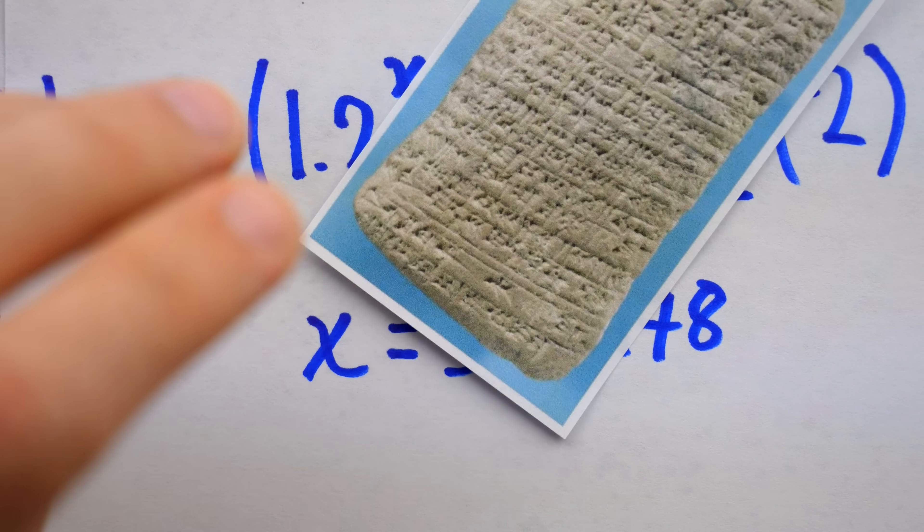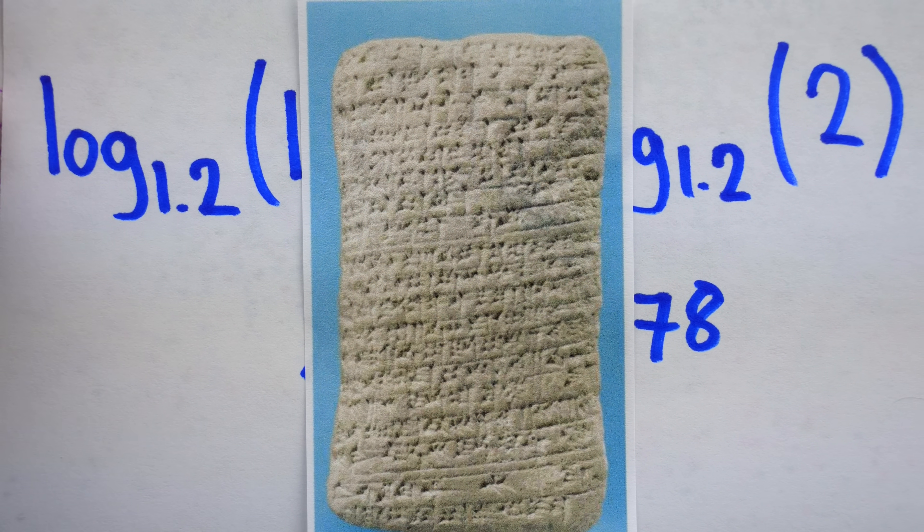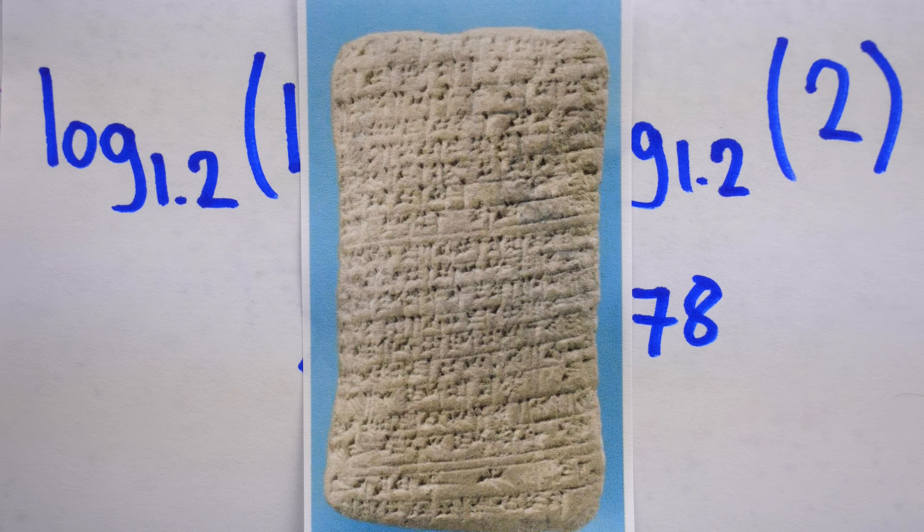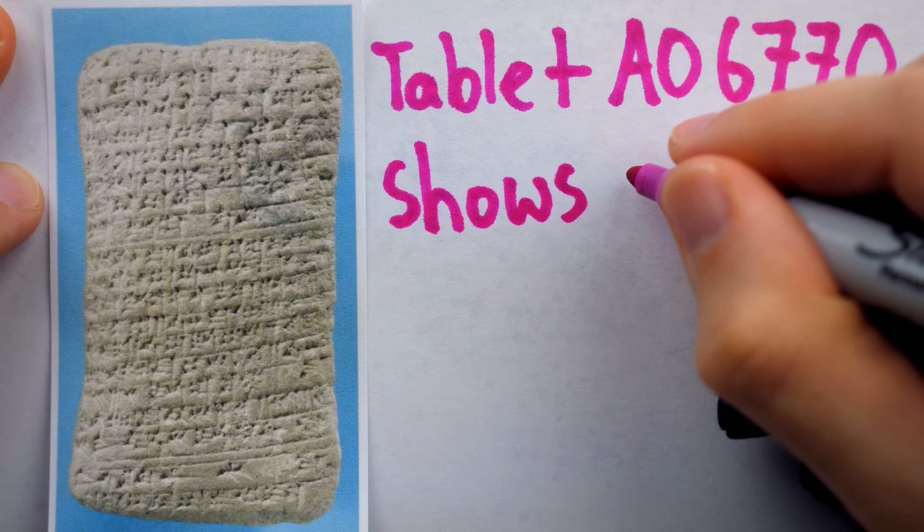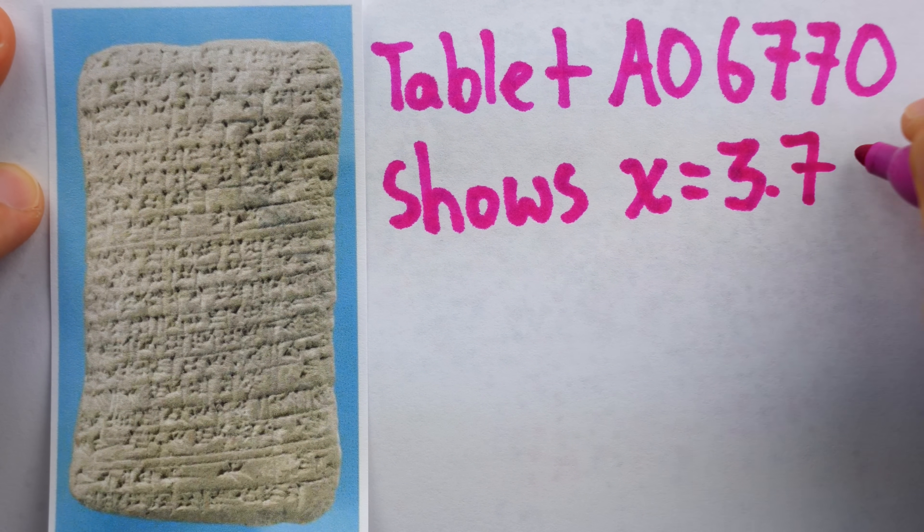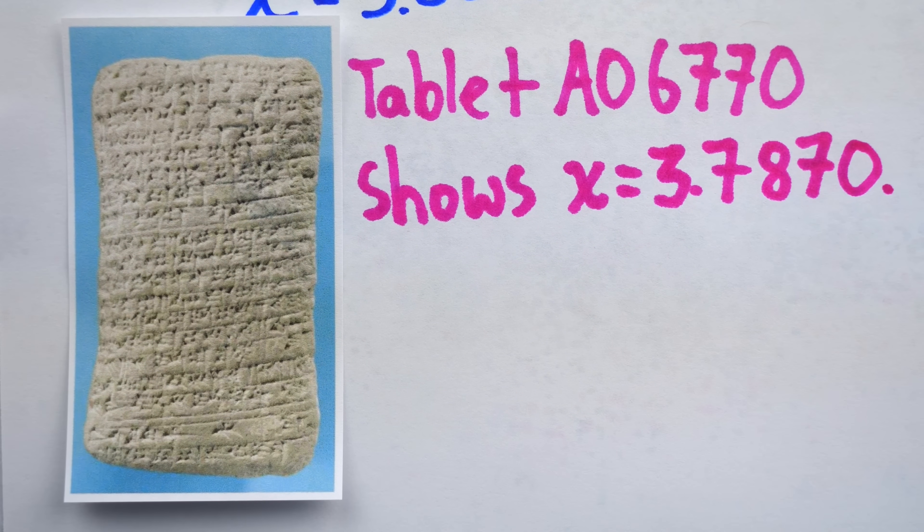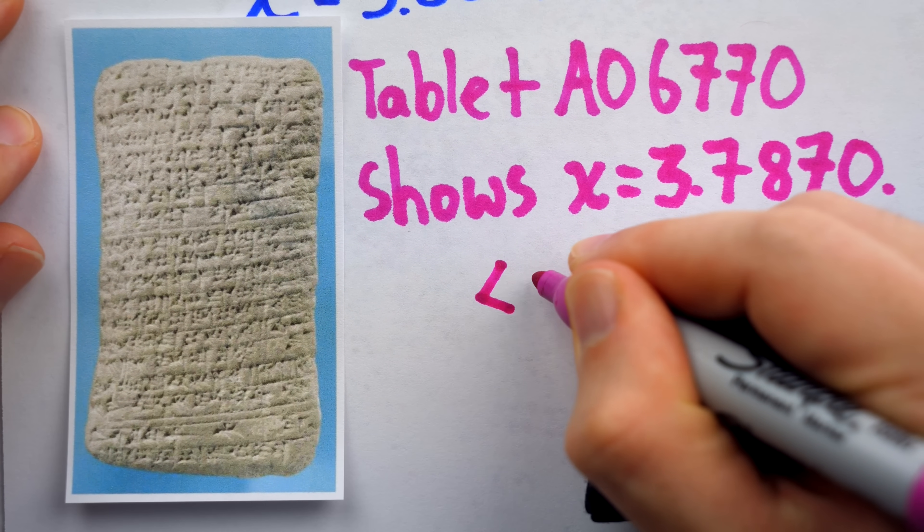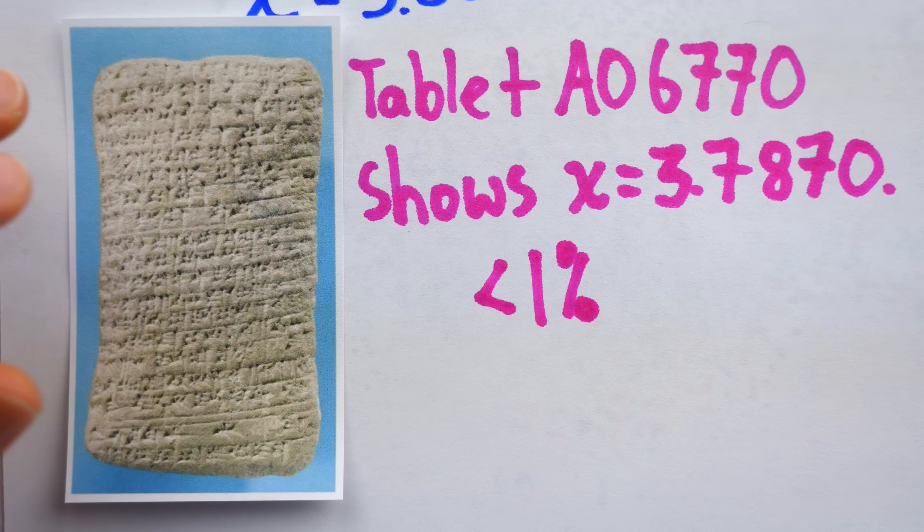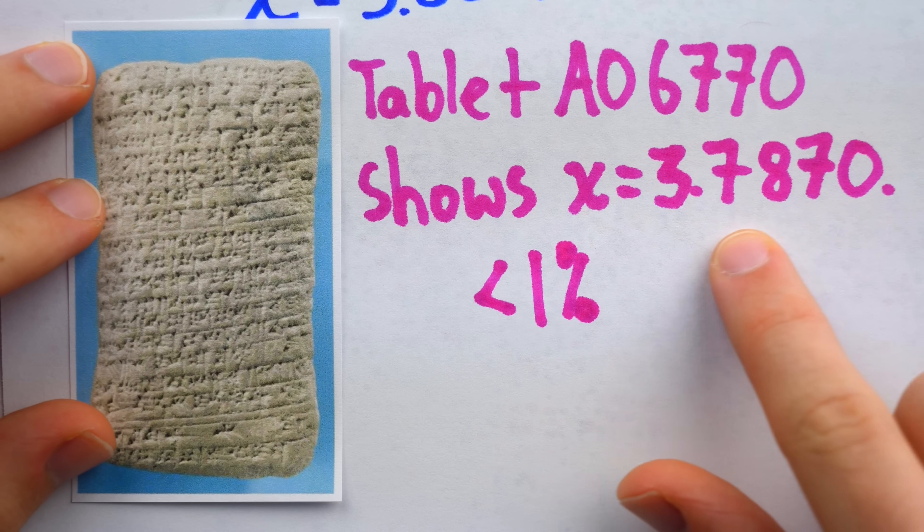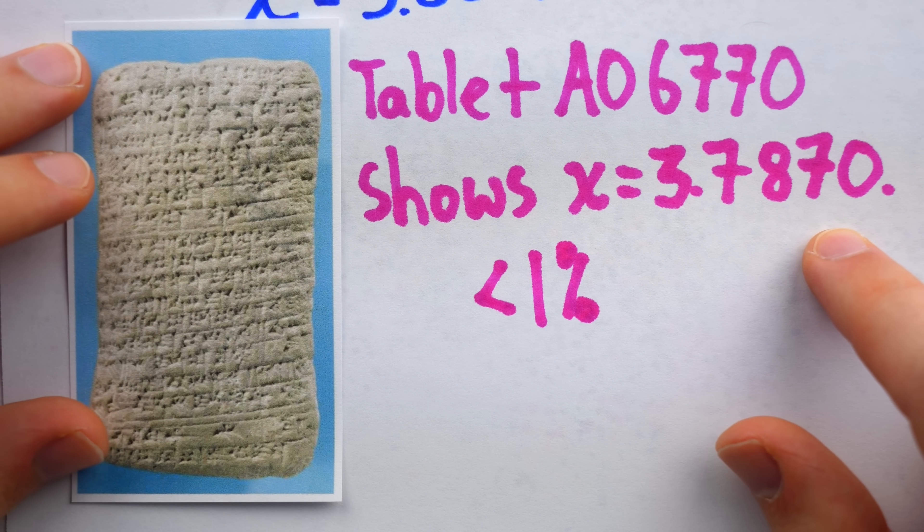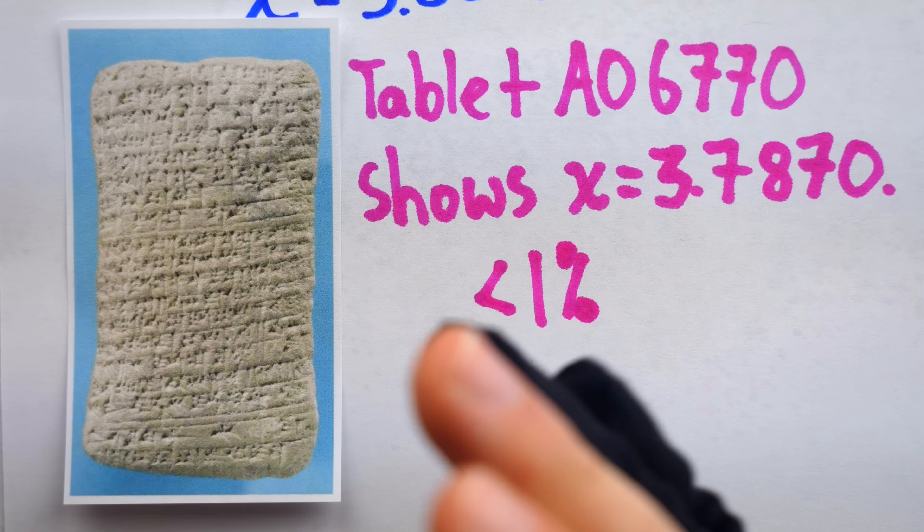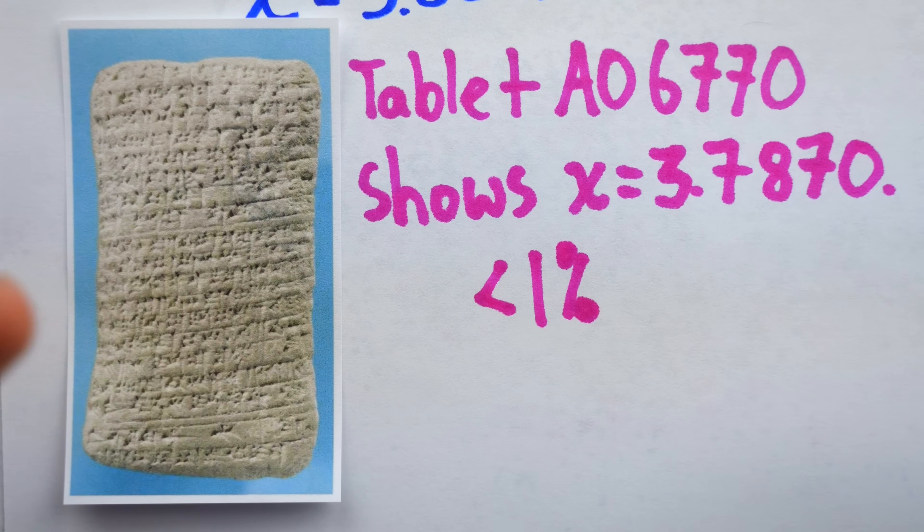But we've completely abandoned what's on tablet AO-6770 in the Louvre's collection. This tablet shows an answer of 3.7870. It's not as accurate as what we got, but it's off by less than one percent.